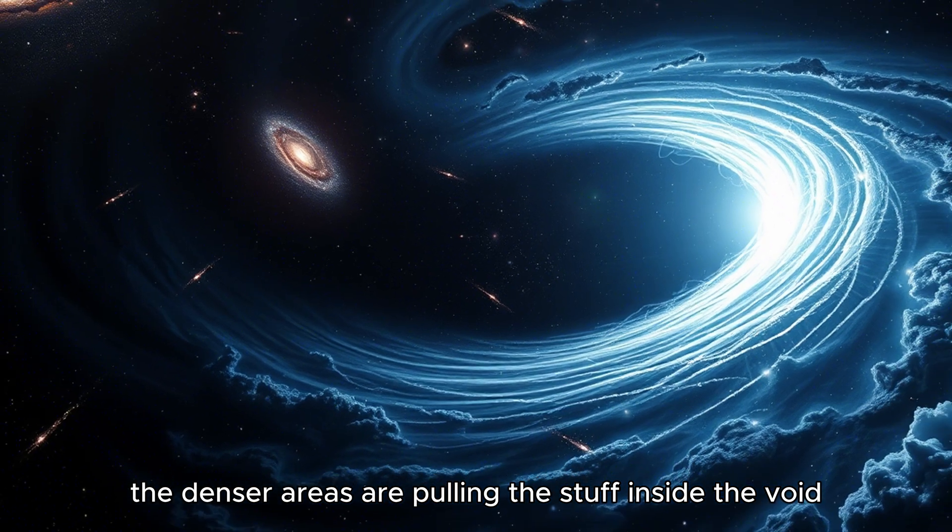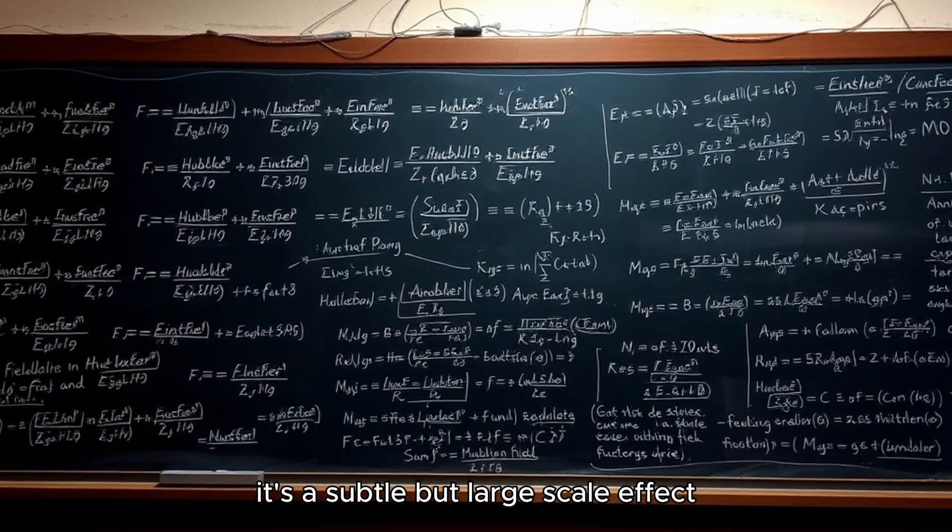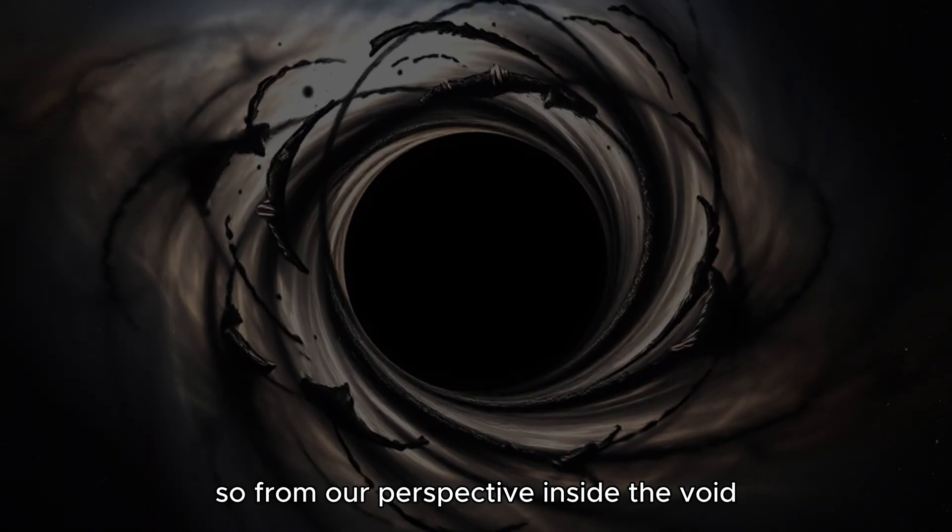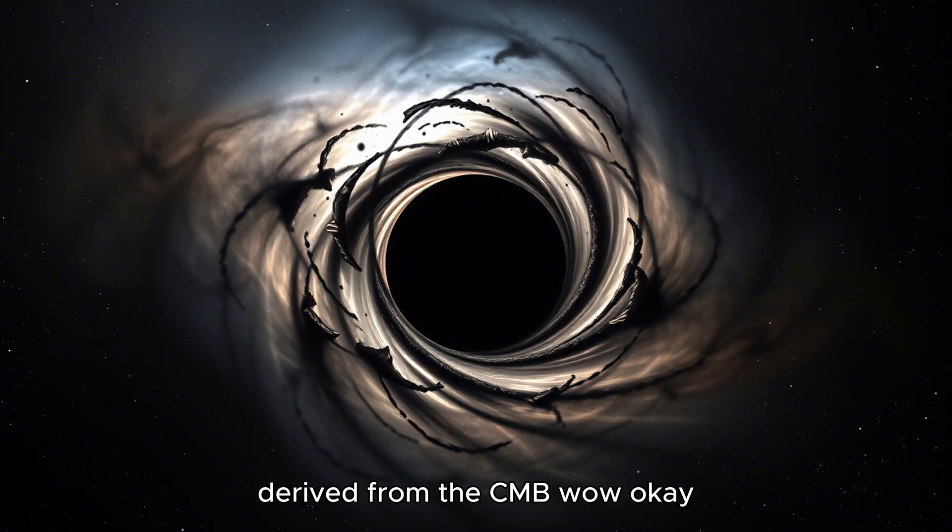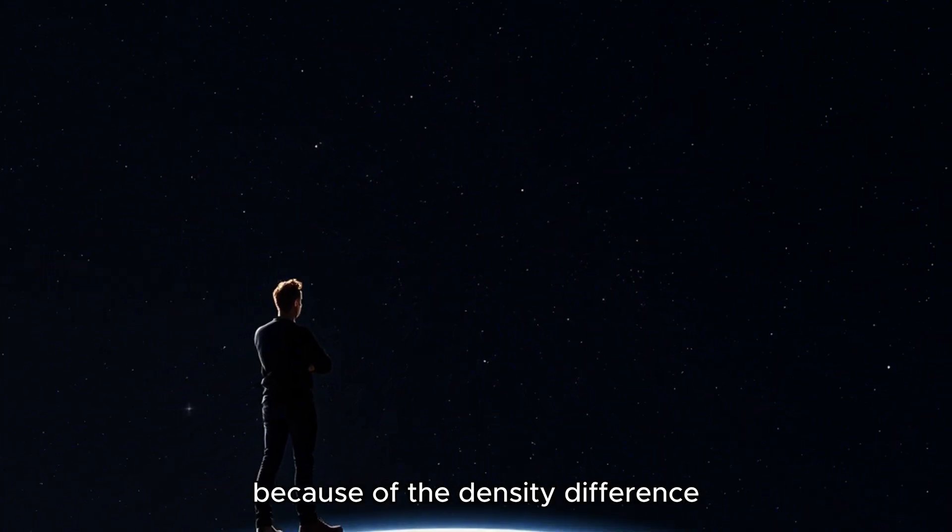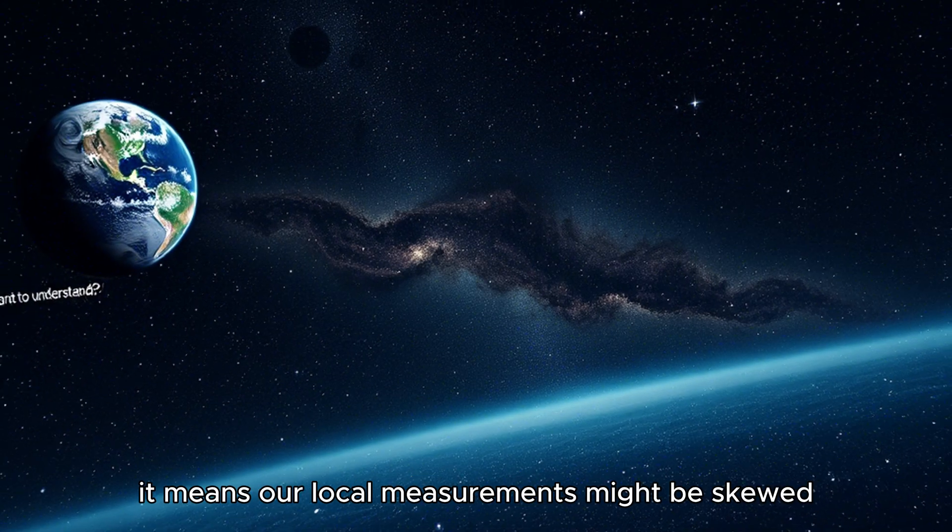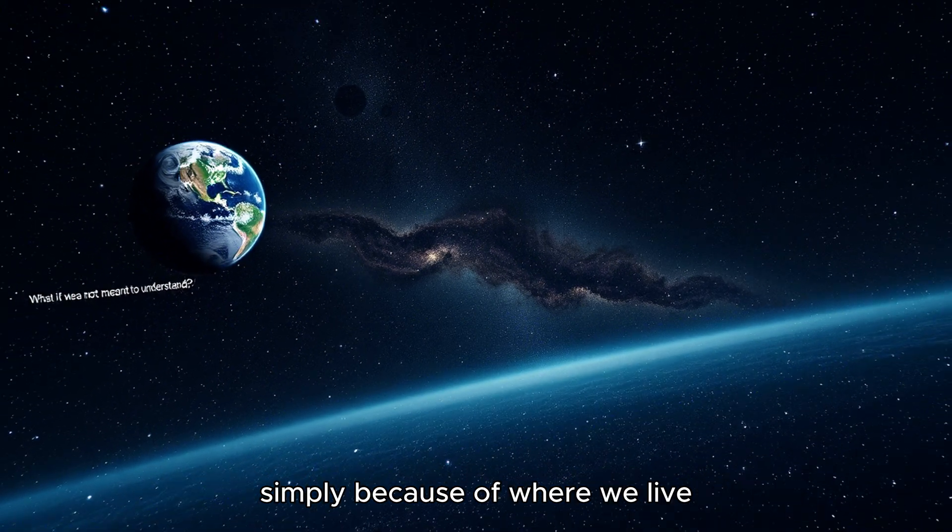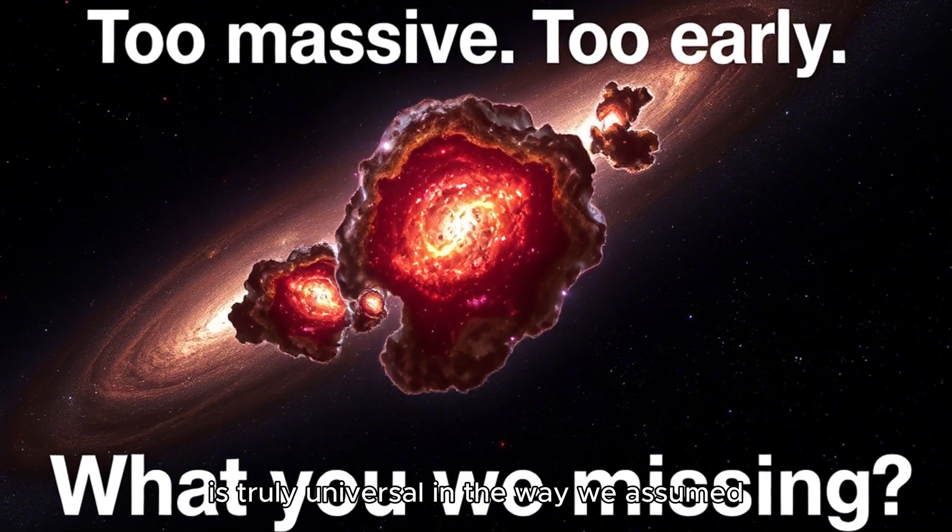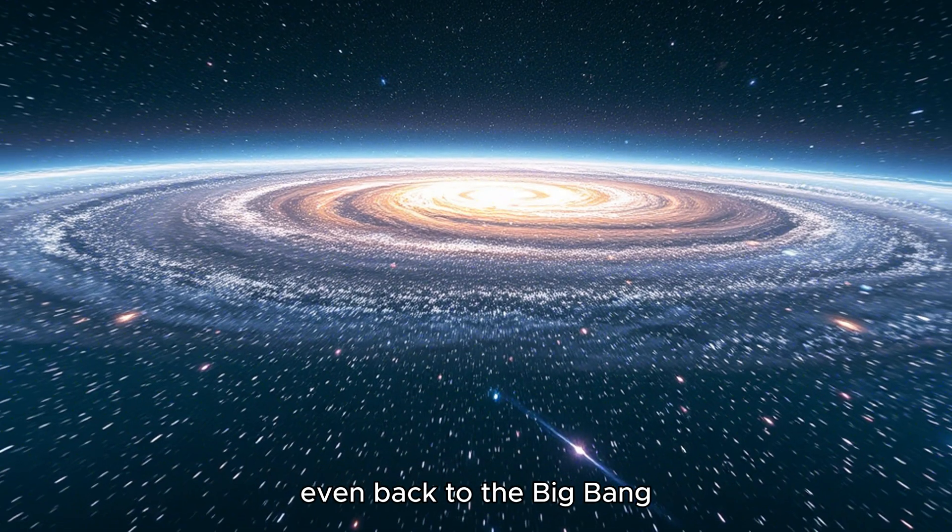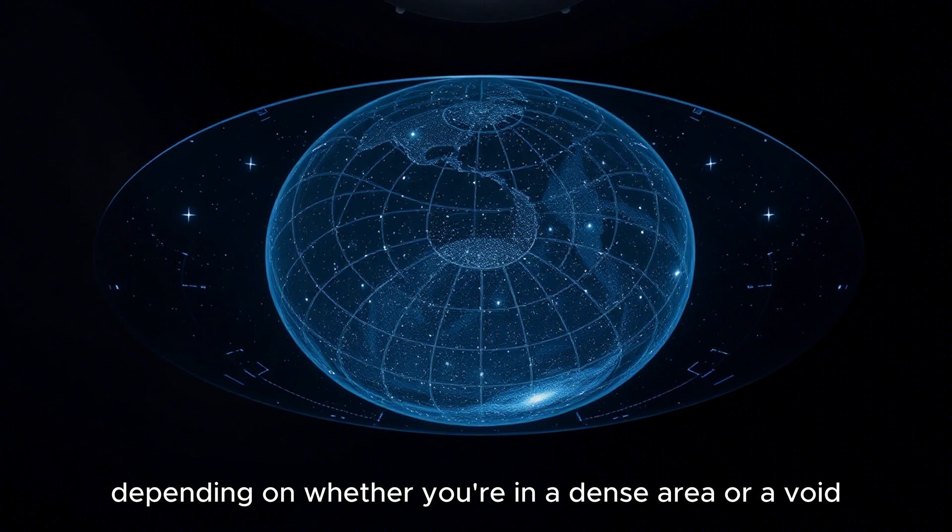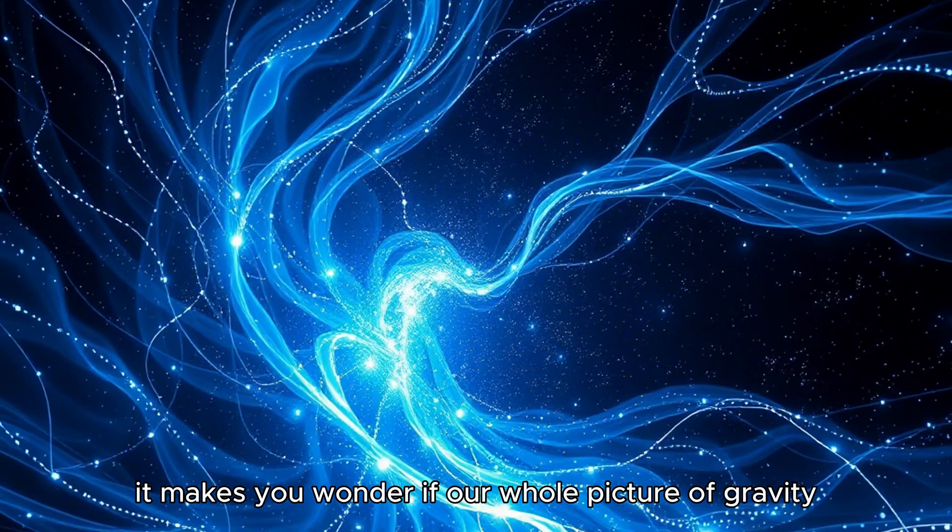So it's like the denser areas are pulling the stuff inside the void outwards. Exactly. It's a subtle but large-scale effect. This outflow, this pull from the outside, accelerates the movement of galaxies within the void. So from our perspective inside the void, it looks like the local expansion is faster than the overall average rate derived from the CMB. That's huge. So it's not a new force. It's gravity working differently on these massive scales because of the density difference. Precisely. And the implication is radical. It means our local measurements might be skewed simply because of where we live. It forces us to question if gravity, or at least its effects on expansion, is truly universal in the way we assumed. It could change how we interpret everything, even back to the Big Bang.